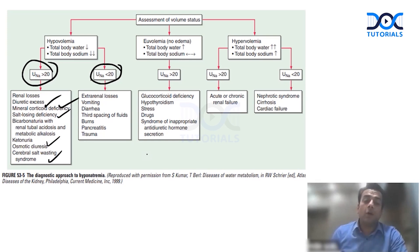If the patient is euvolemic, as in the index question, and the urinary sodium is more than 20, the most common cause is SIADH, but it is a diagnosis of exclusion. Then it could be drugs, it could be stress, hypothyroidism and glucocorticoid deficiency or hypocortisolism.